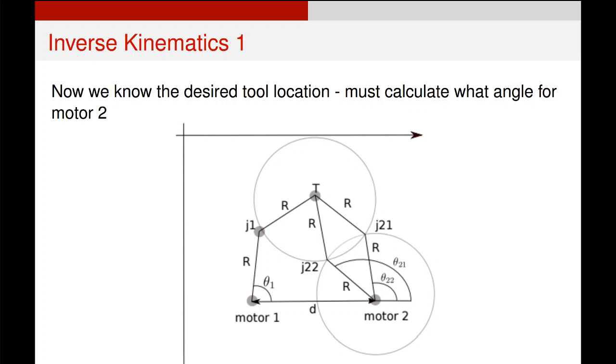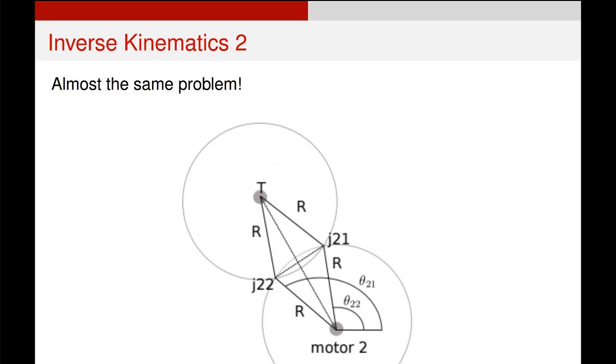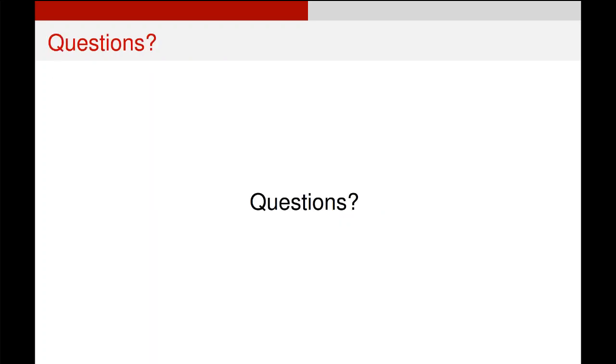Now, doing the inverse is actually exactly the same process. But instead of starting from knowing that point there, we start from knowing this point up here and asking what must this angle down here be. Once again, there's two possible solutions. There's an arm down there and an arm up there. But the mathematics of it are almost identical to the previous problem, which is worked through in the lab script. So good luck. I'll do another video going through that in a little bit more detail. But that should be enough to get you started for the moment.